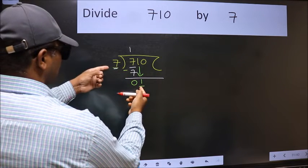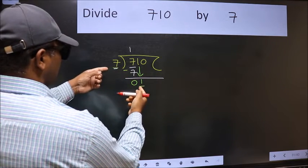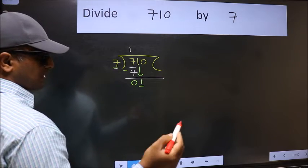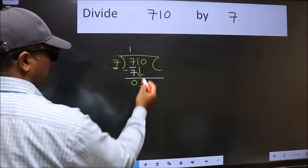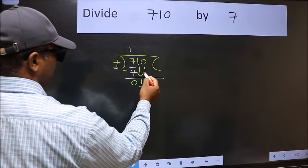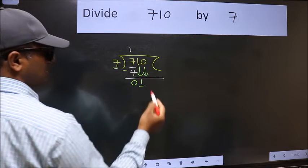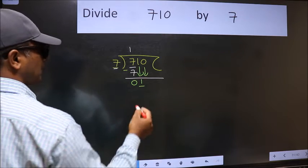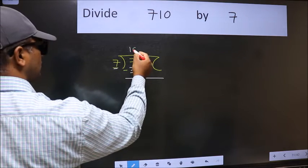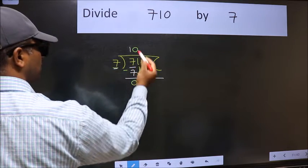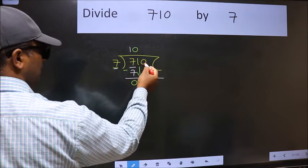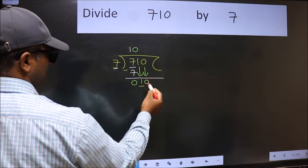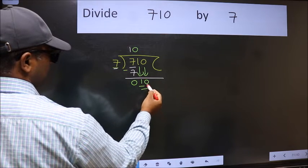1 is smaller than 7, so we should bring down the second number. The rule to bring down the second number is we should put 0 here. Then only we can bring this number down. Now we have 10.